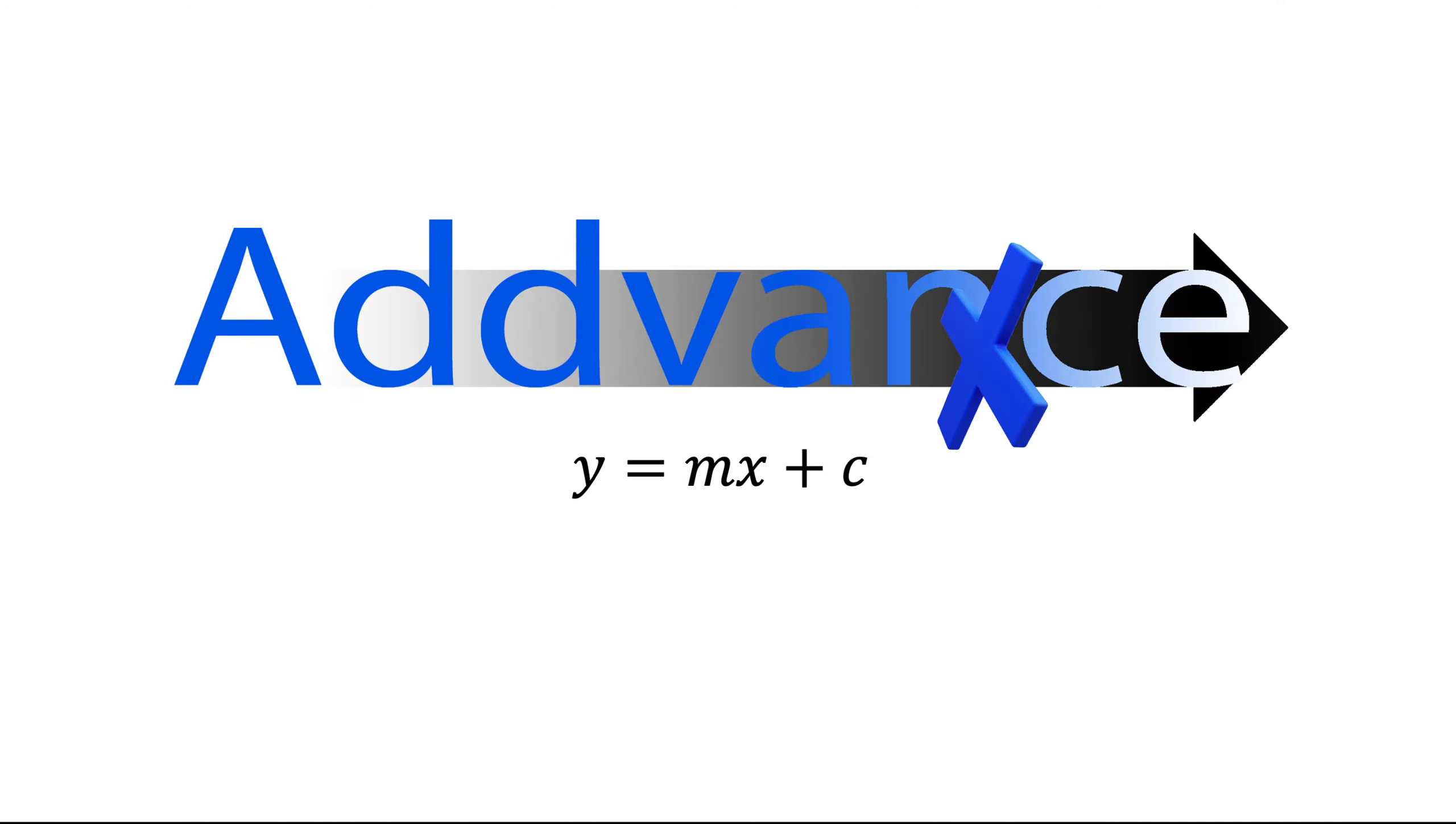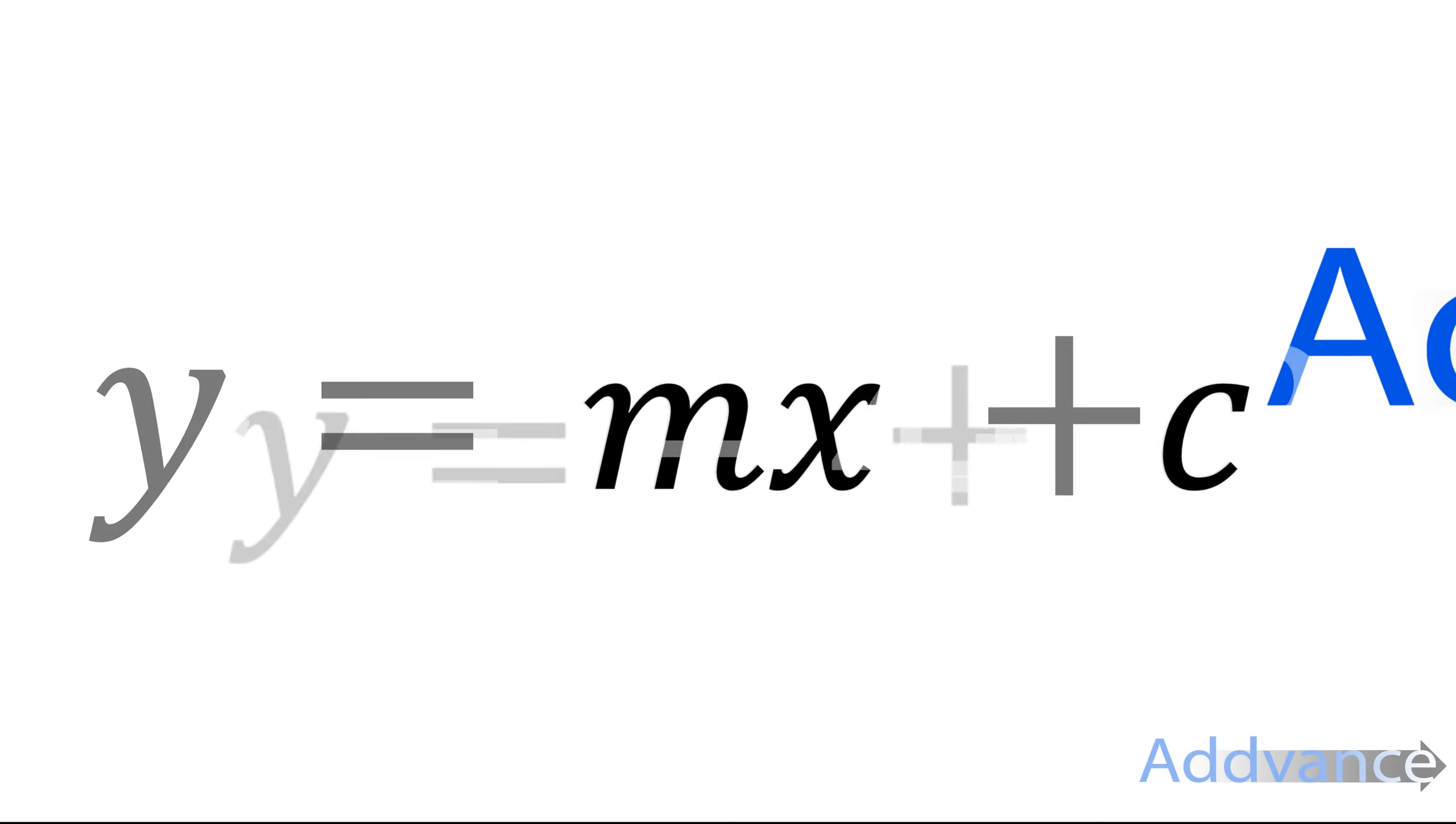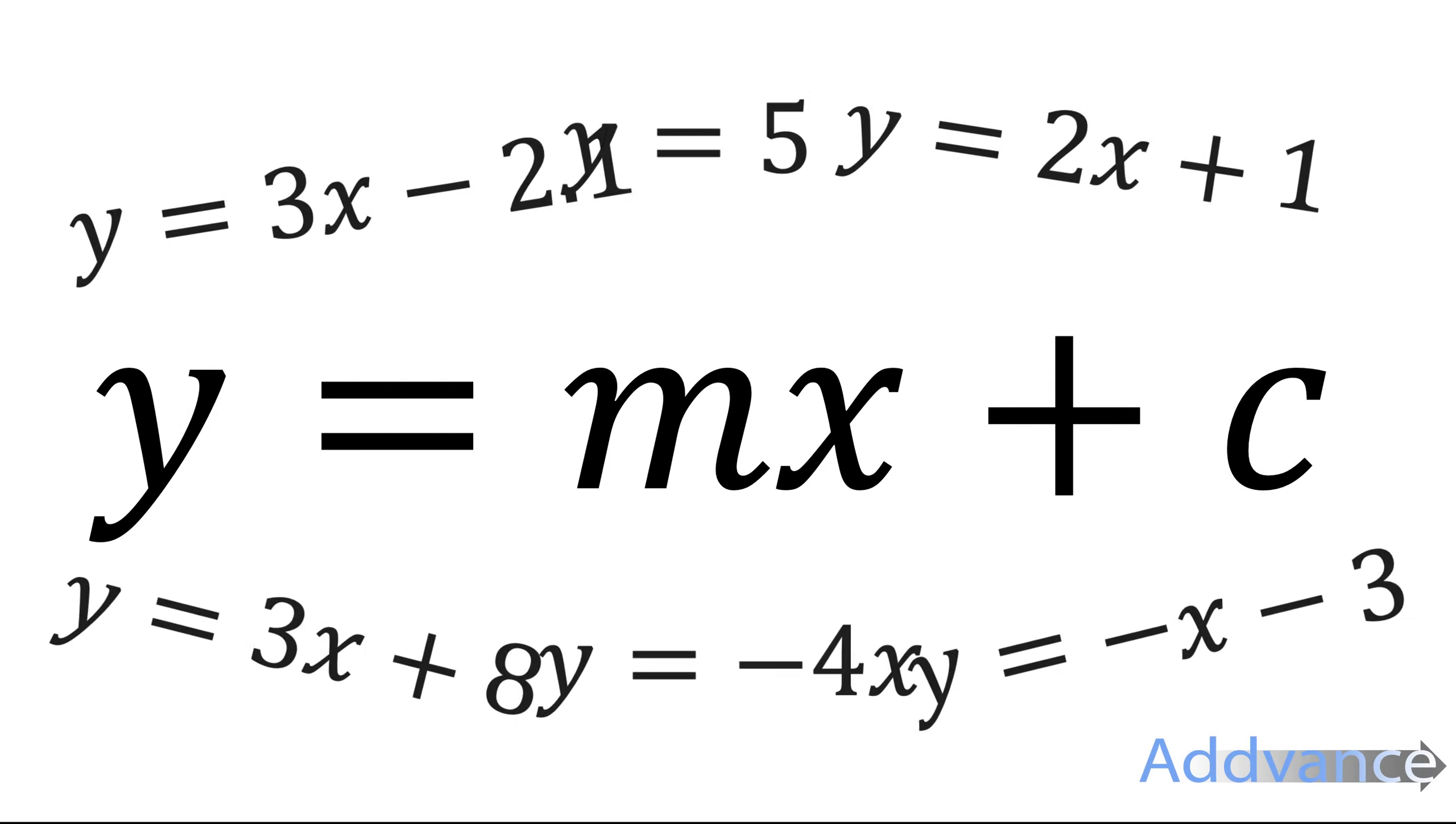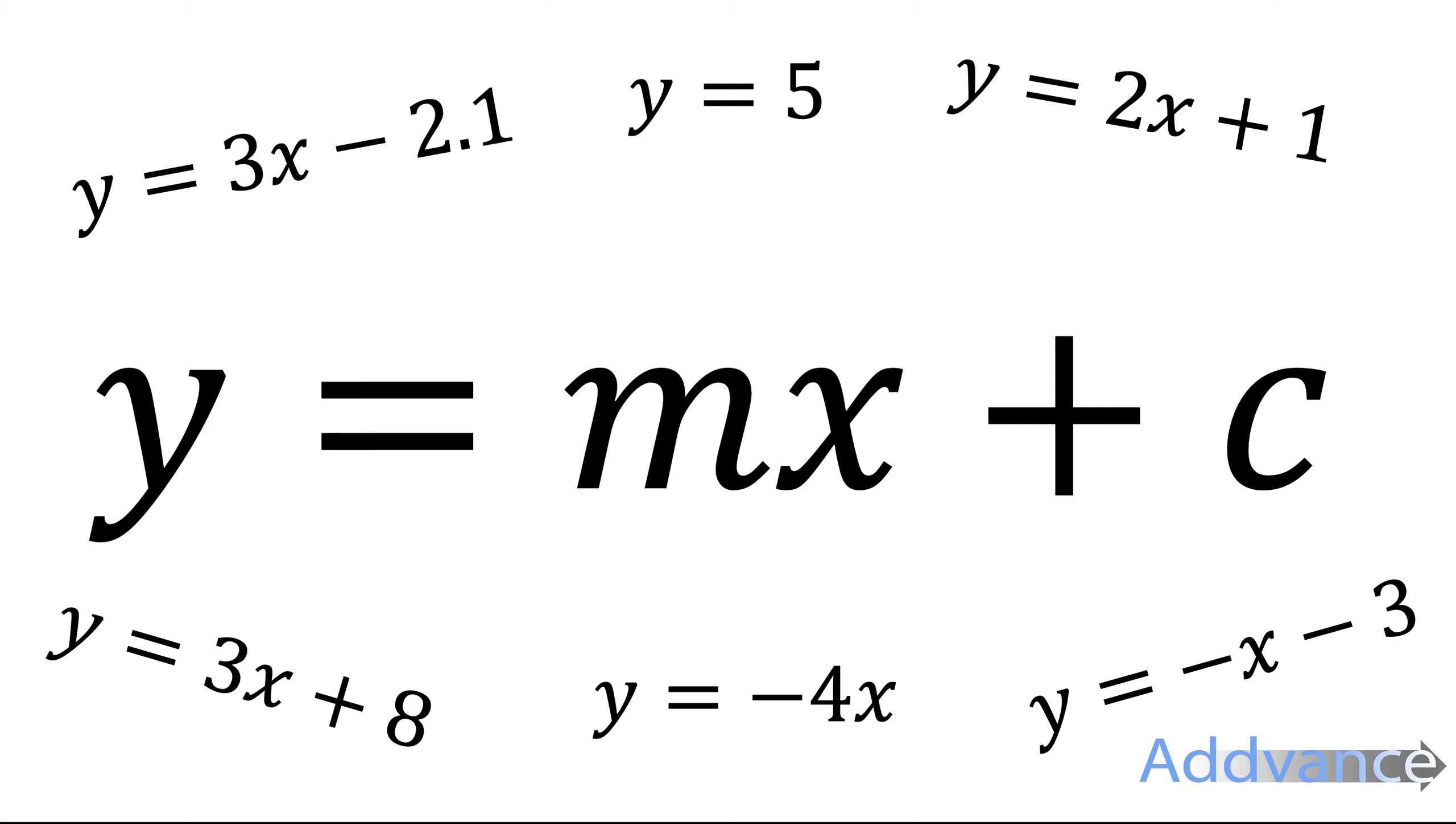Hello everybody, welcome back. Today we're looking at y equals mx plus c. Y equals mx plus c is the basic form of any straight line graph. I've got some examples here where all these equations on the outside are equations in the form y equals mx plus c, and these equations will make a straight line graph.